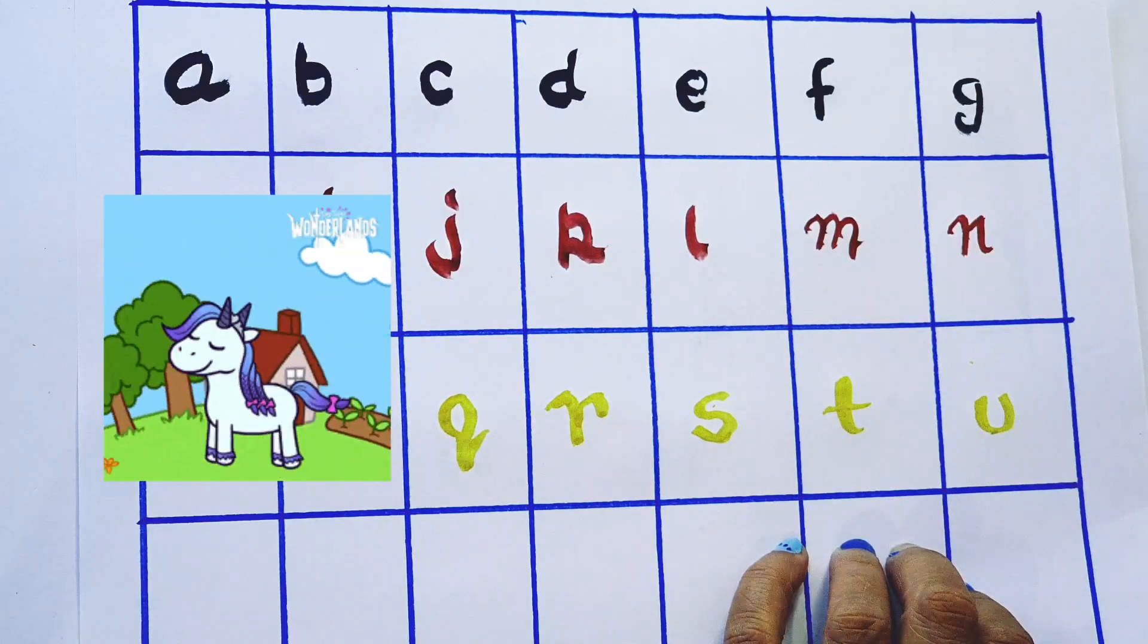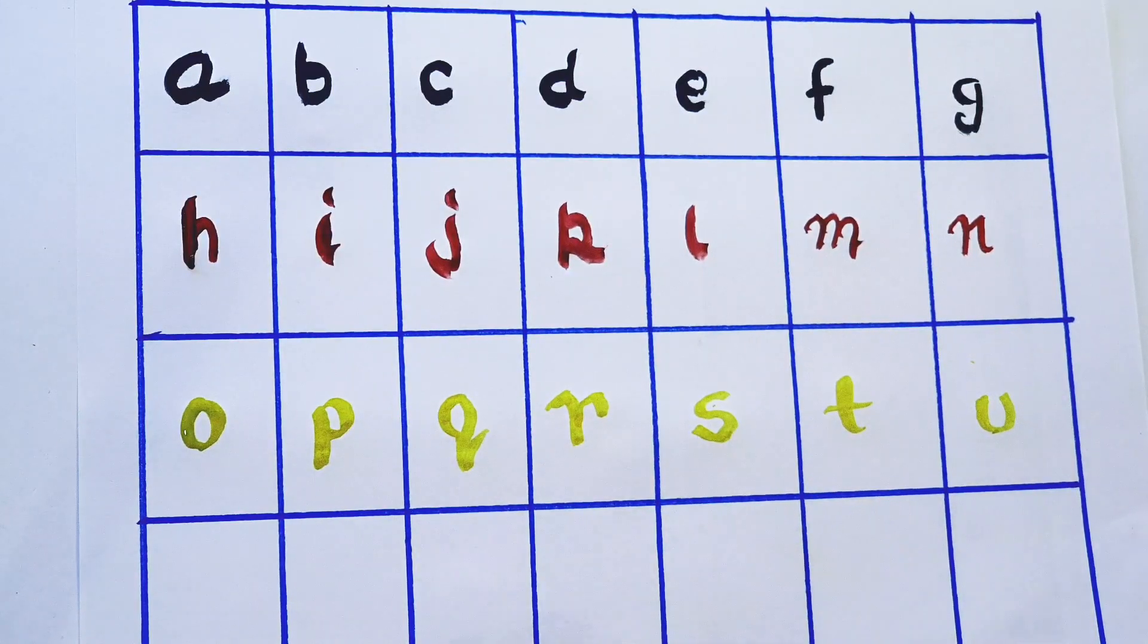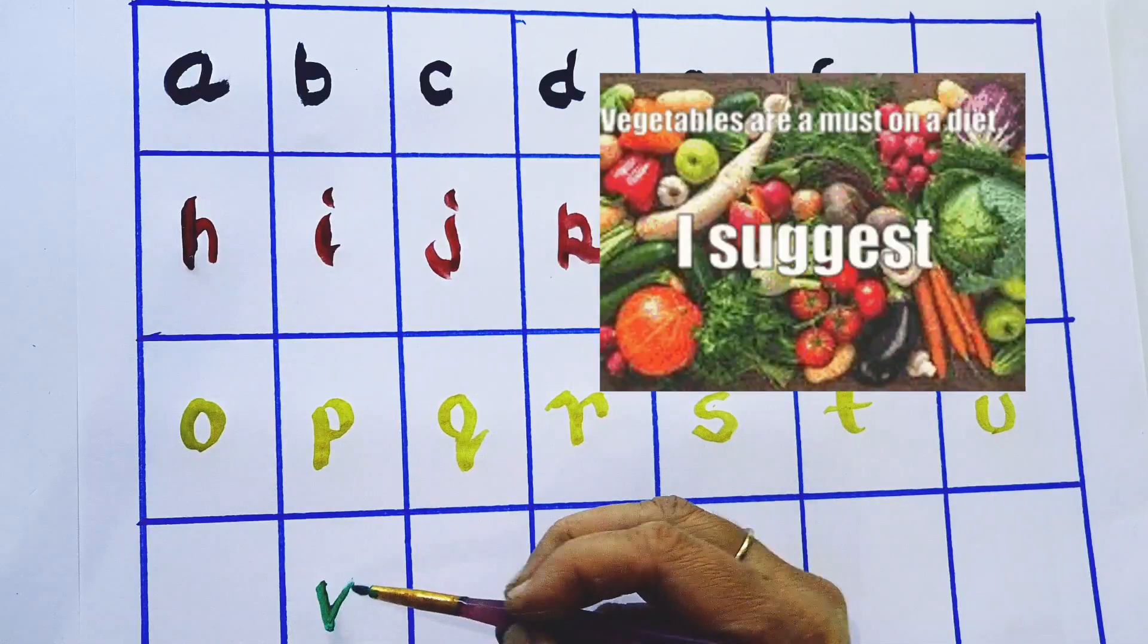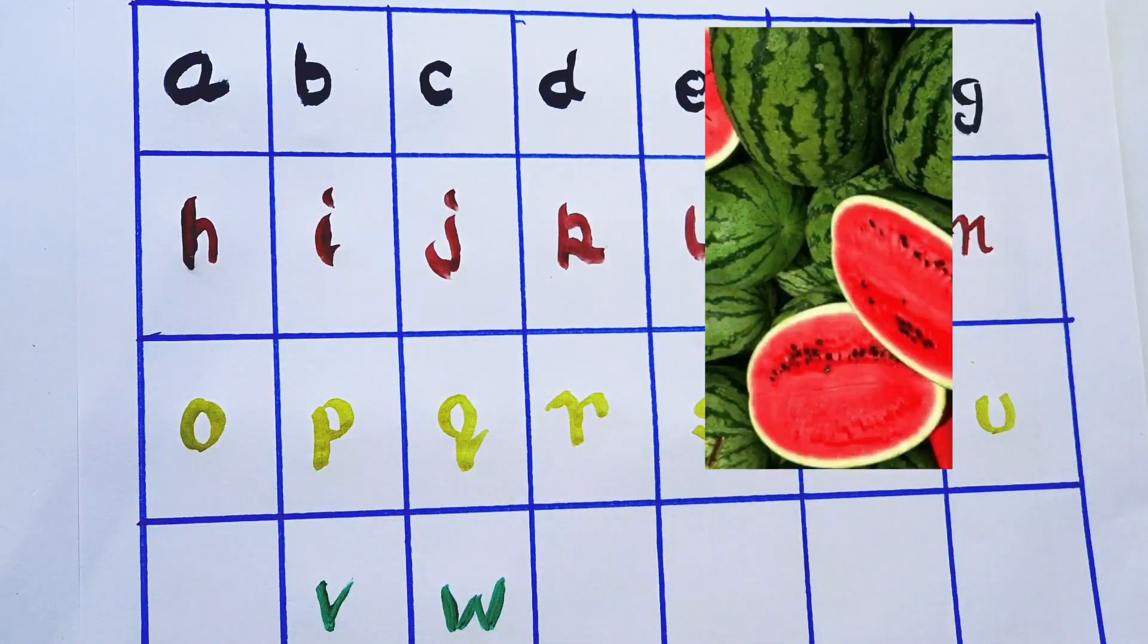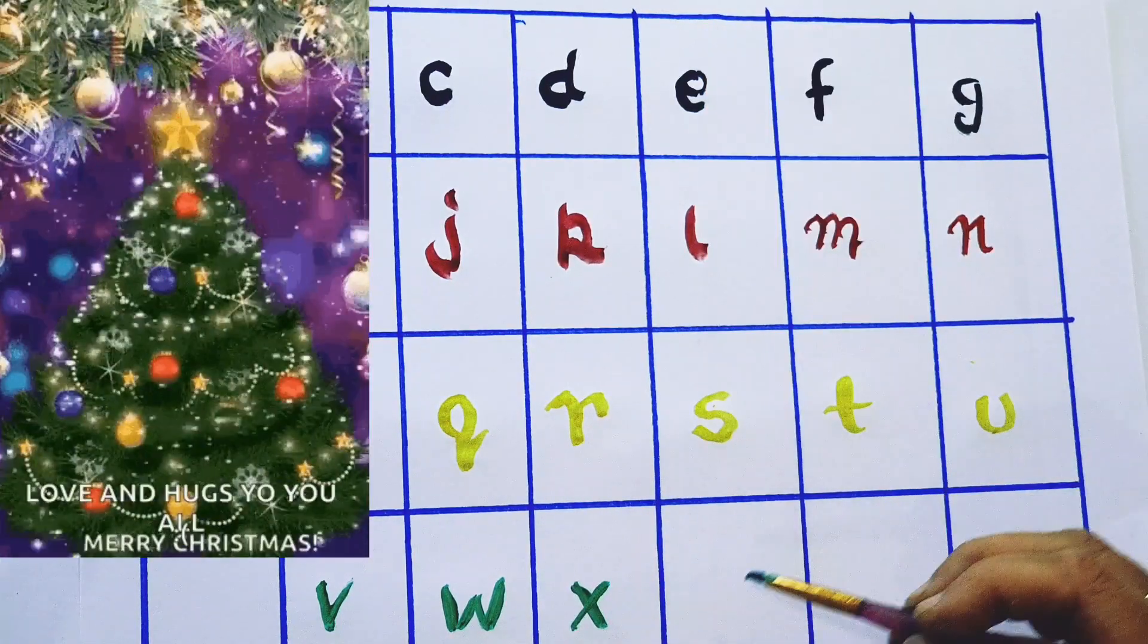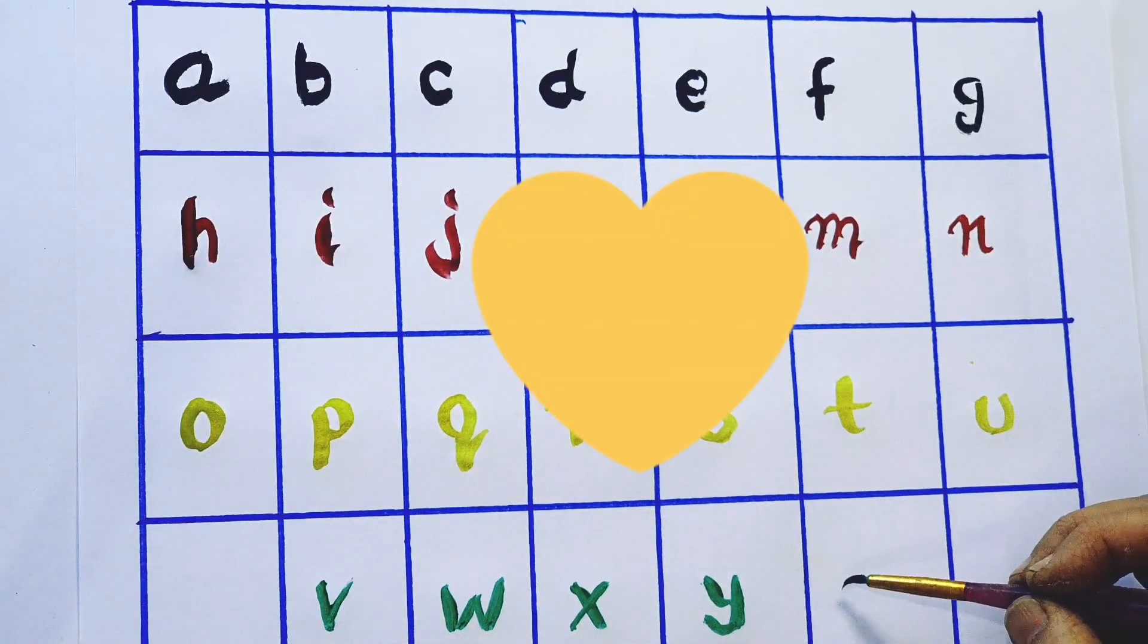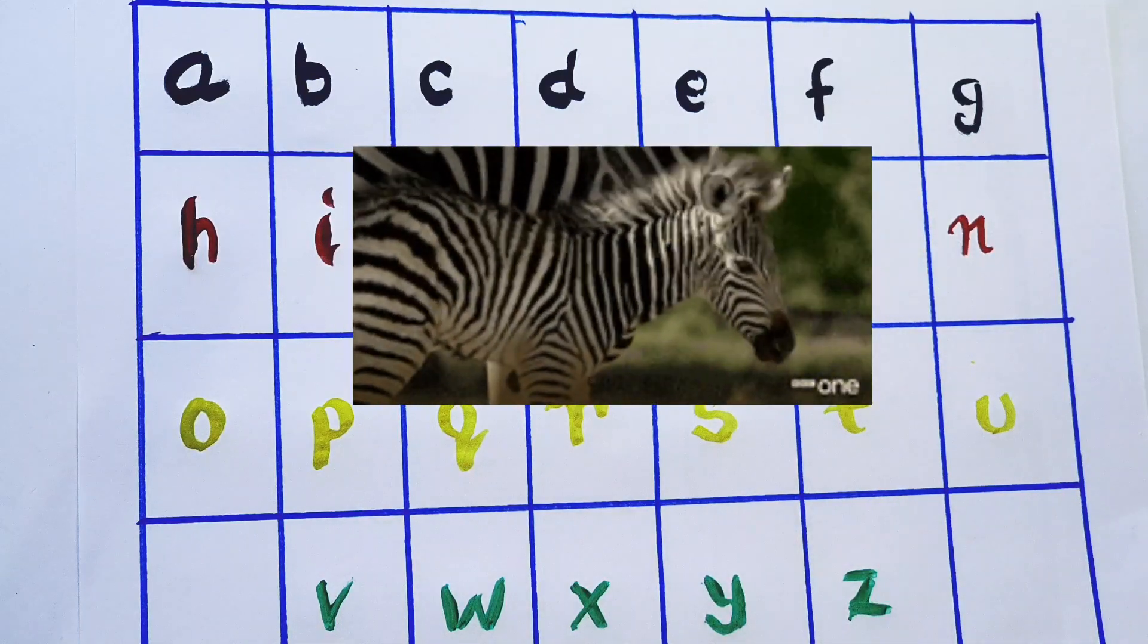Green color, V for vegetable, W for watermelon, X for Christmas tree, Y for yellow, Z for zebra.